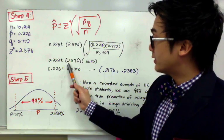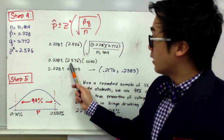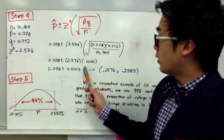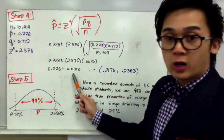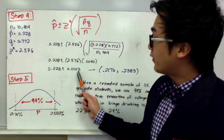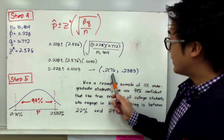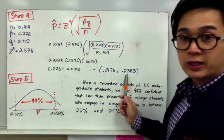From here, we'll multiply it with our Z star or critical value, which is 2.576 times 0.0040, giving us a margin of error of 0.0103.